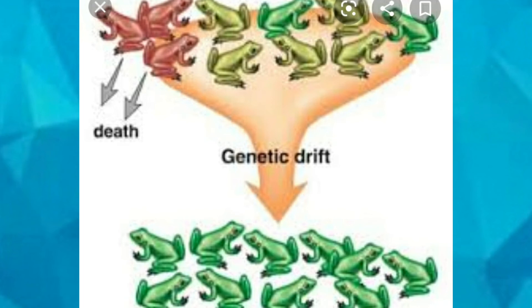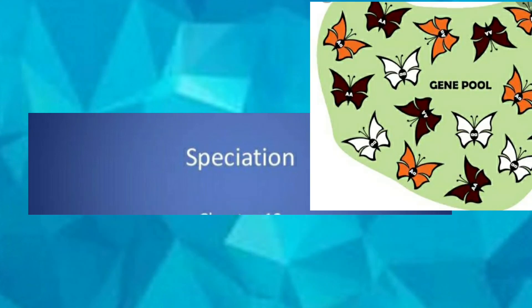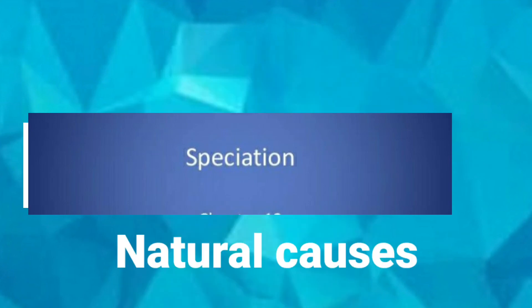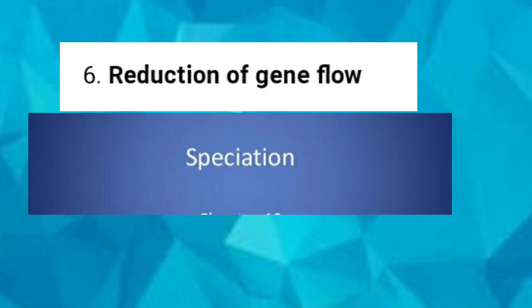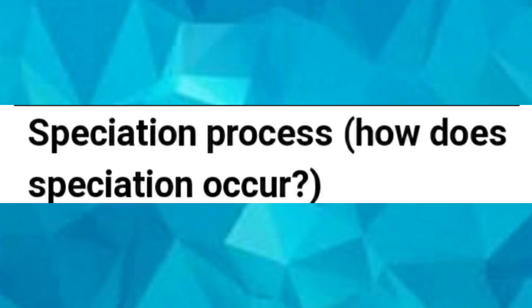So these are the factors which lead to speciation or formation of genetically independent groups of organisms: natural selection, genetic drift, gene pool, migration, chromosomal mutations, natural causes, and reduction of gene flow. These are the factors which help in the formation of genetically independent groups, which is called speciation.